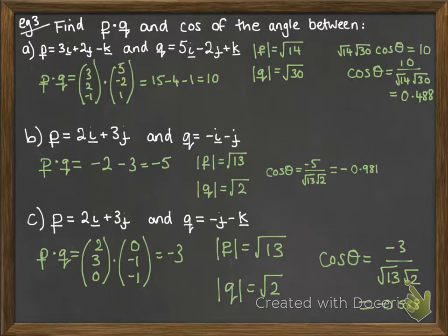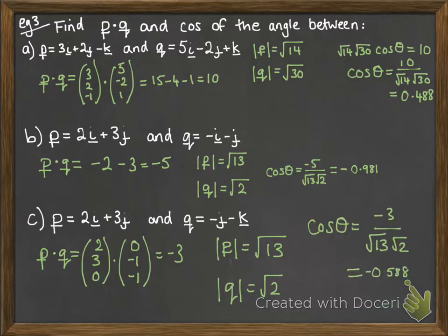Now, and apologies, because that last bit at the bottom seems to be covered up by the watermark. So what that says is cos theta equals minus 3 over root 13 root 2, which equals minus 0.588. There you go. I've just moved that up for you so you can see the finishing part of it.